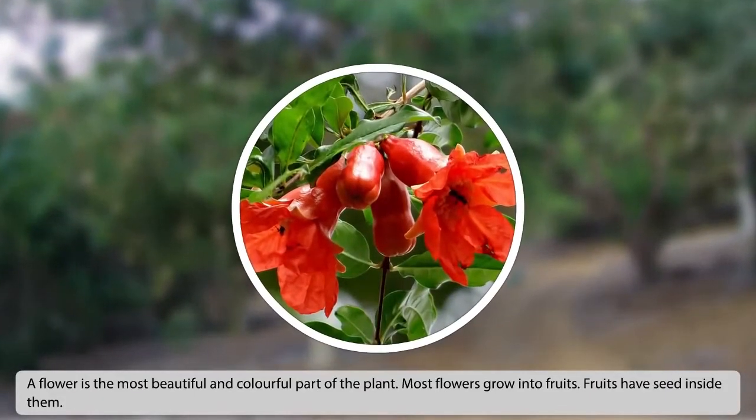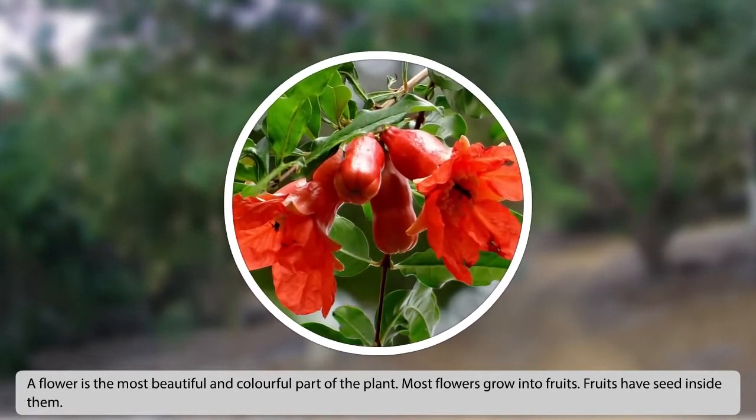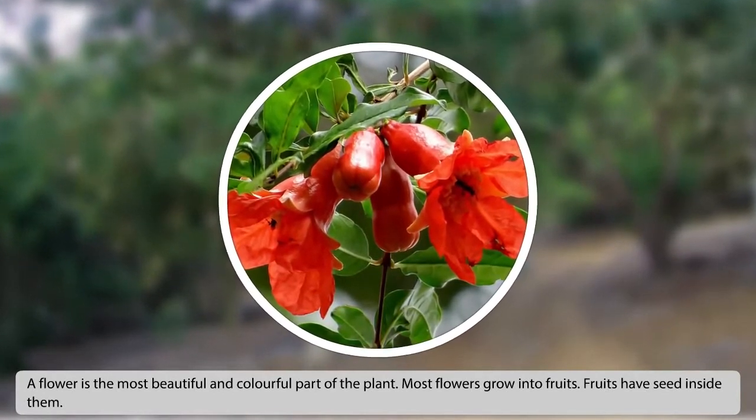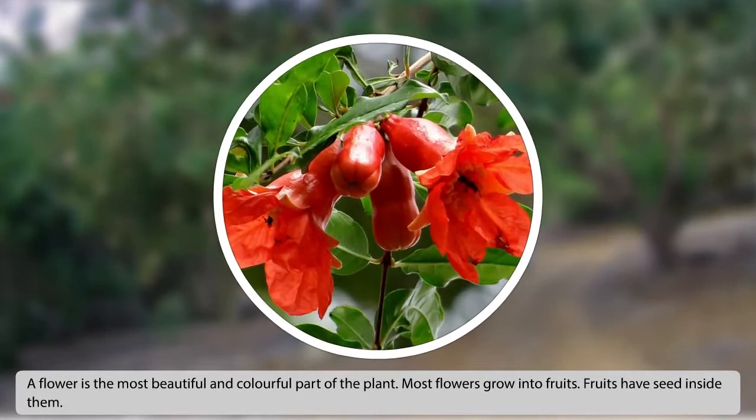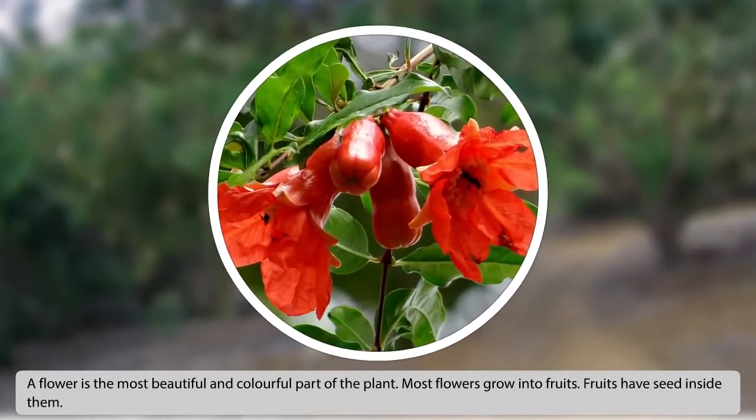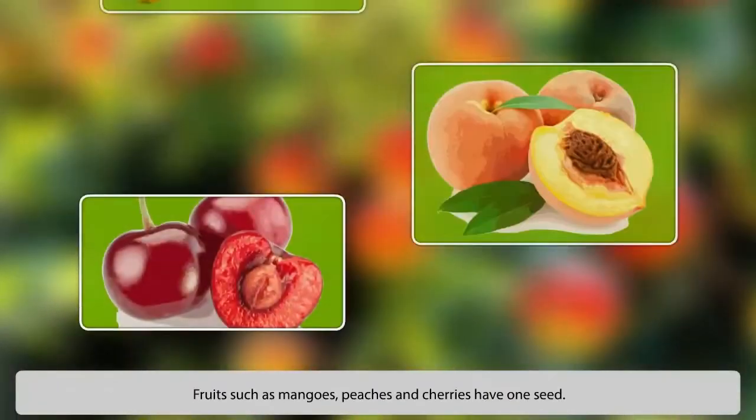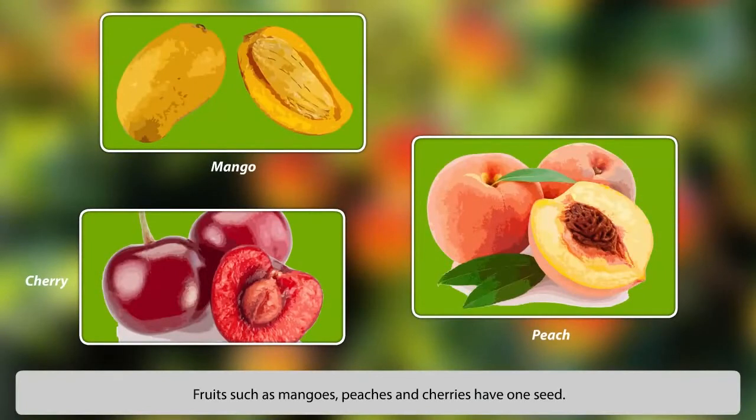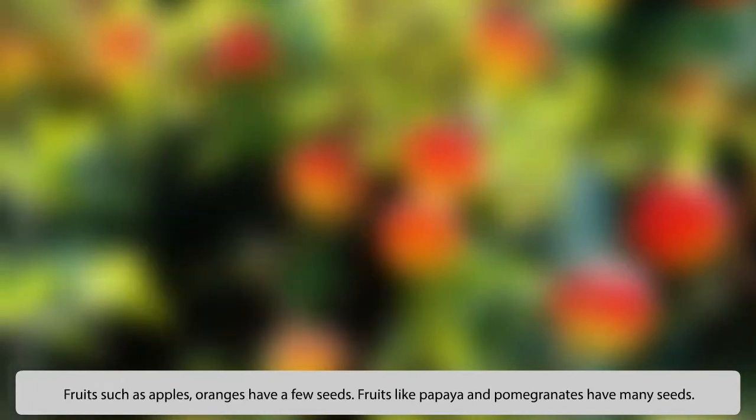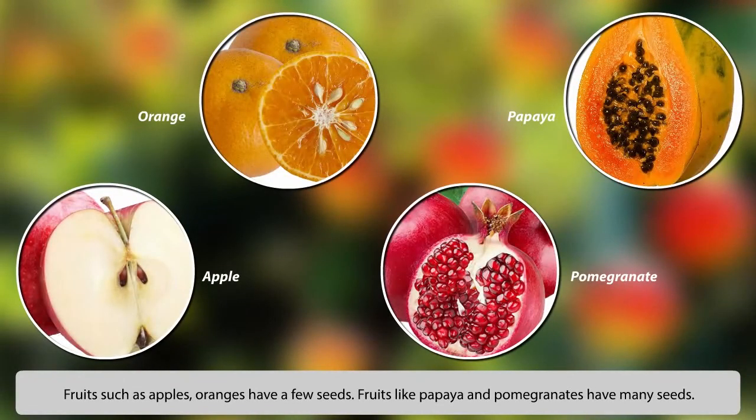A flower is the most beautiful and colorful part of the plant. Most flowers grow into fruits. Fruits have seeds inside them. Fruits such as mangoes, peaches and cherries have one seed. Fruits such as apples and oranges have a few seeds. Fruits like papaya and pomegranates have many seeds.